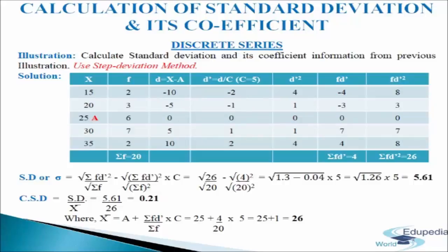Now we write the formula for SD: the square root of sigma fd dash square divided by sigma f minus the quantity sigma fd dash divided by sigma f, squared, multiplied by c. Putting in the values, we get 5.61 as SD. For CSD, mean equals a plus sigma fd dash divided by sigma f, multiplied by c, giving 26 as mean. So CSD equals 5.61 divided by 26, giving 0.21 as coefficient of standard deviation. This is how we calculate standard deviation using the step deviation method.